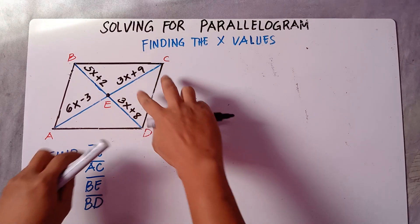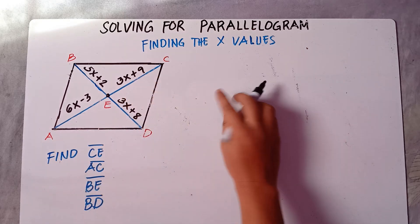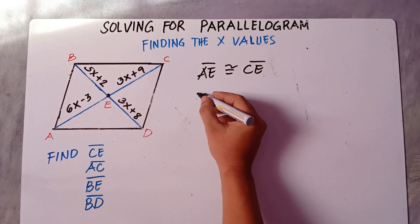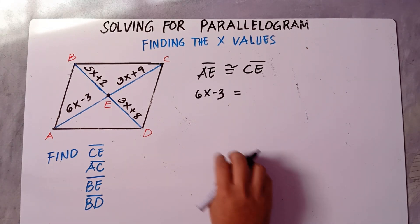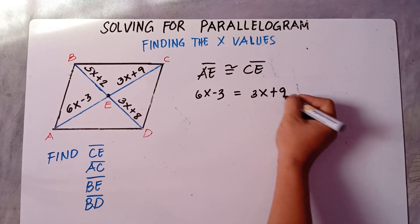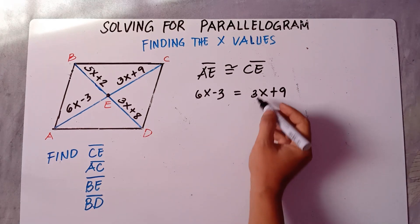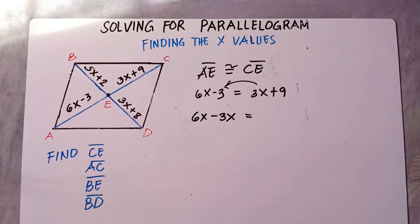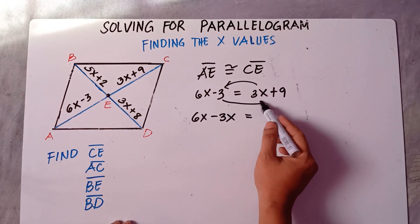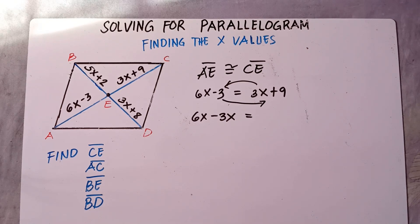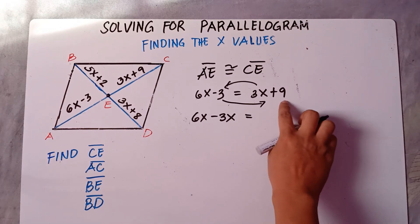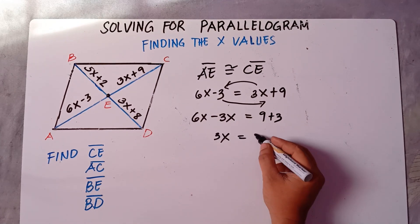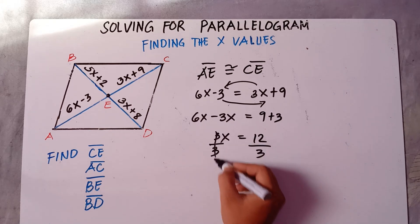First, we solve for line CE. These two lengths are congruent, so line AE is congruent to line CE. If AE is 6X minus 3 and CE is 3X plus 9, we set them equal: 6X minus 3 equals 3X plus 9. To find X, transpose 3X from right to left and transpose 3 from left to right, changing signs. So 6X minus 3X equals 9 plus 3, giving 3X equals 12. Divide both sides by 3, so X equals 4.